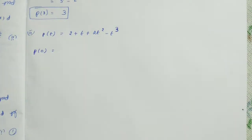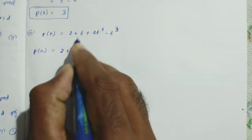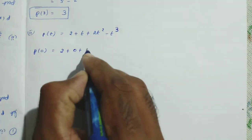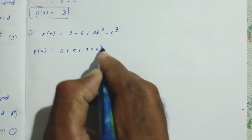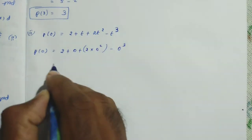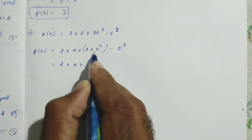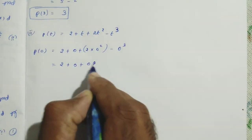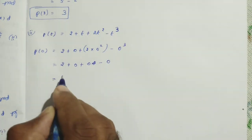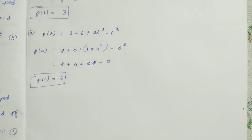P of 0 means, instead of t, you can substitute the value 0. So, instead of t, put 0 in this polynomial: 2 plus 0 plus 2 into 0 squared minus 0 cubed. That gives 2 plus 0 plus 0 minus 0, so the answer is 2. P of 0 equals 2.